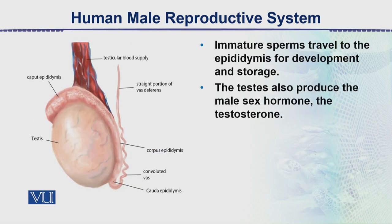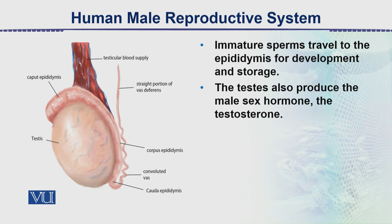The immature sperm travel to the epididymis. In this diagram, we see this part is the testes, and here is the epididymis. Sperm formation occurs in the testes, and maturity of the sperm occurs in the epididymis. When the sperm are mature, they start moving. The immature sperm travel in the epididymis for development and storage. The testes also produce the male sex hormone, testosterone.